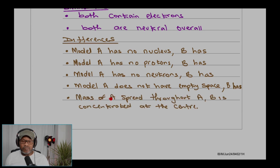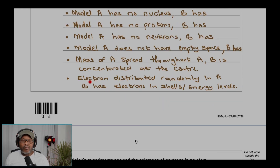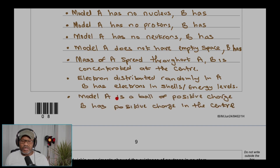In Model A, mass is spread throughout, whereas in today's model it is concentrated at the center. Electrons are distributed randomly in Model A, whereas today's model has electrons in shells or energy levels. Model A is a ball of positive charge, while today's model has positive charge concentrated in the center.